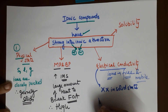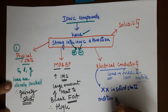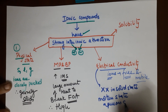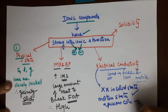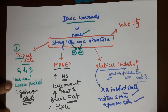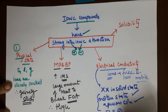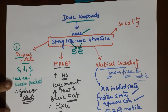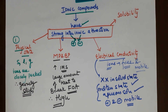However, if you have the ionic compound in the molten state or in aqueous solution, then they do conduct electricity, because under these two conditions the positively charged ions and the negatively charged ions are mobile. If they are mobile, they can move, and only then can they conduct electricity.